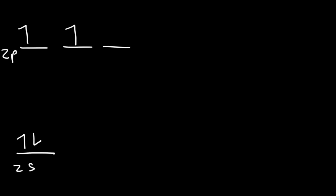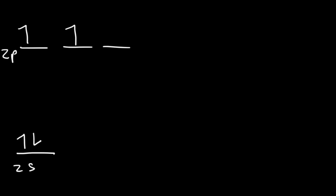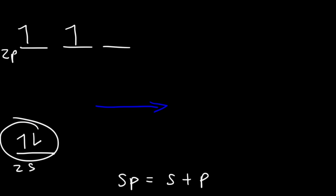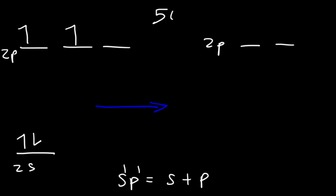Now let's talk about the sp hybrid orbital. To make the sp hybrid orbital, we need one s orbital and one p orbital. The other two p orbitals are unhybridized and remain unaffected. Since one out of two orbitals is s and one is p, we have 50% s character and 50% p character. Therefore, the sp hybrid orbital should be right in between the s orbital and the p orbital energetically.